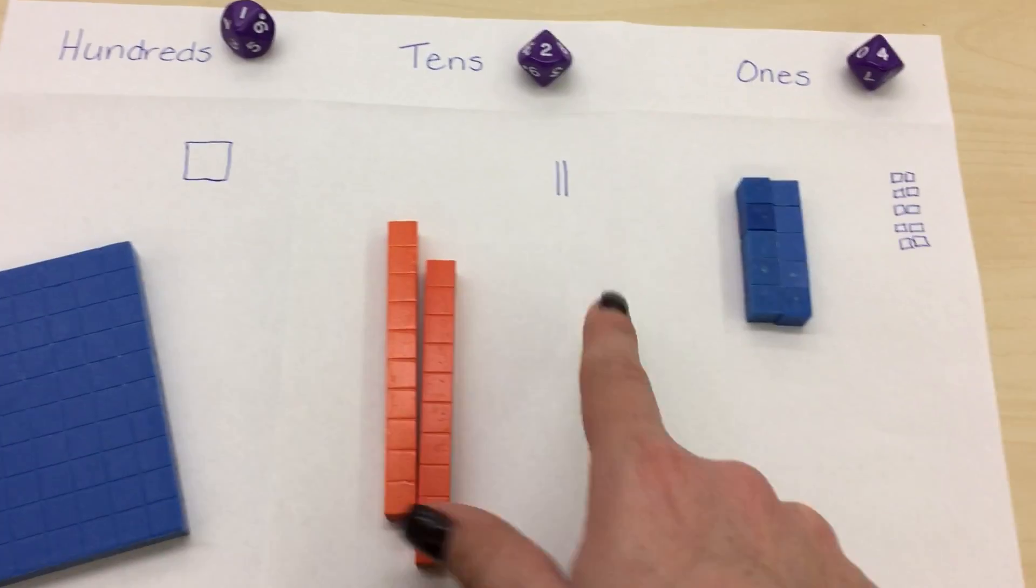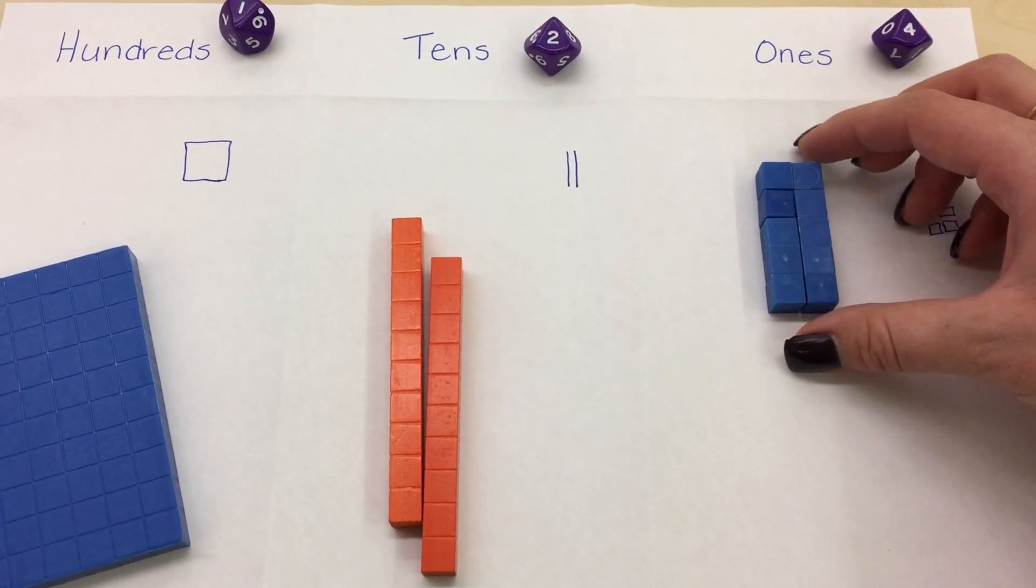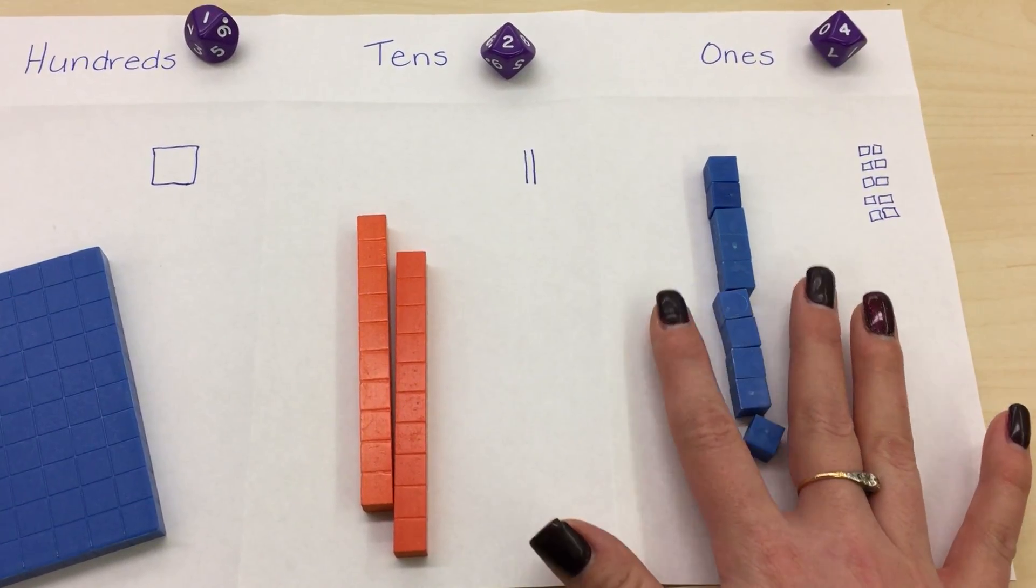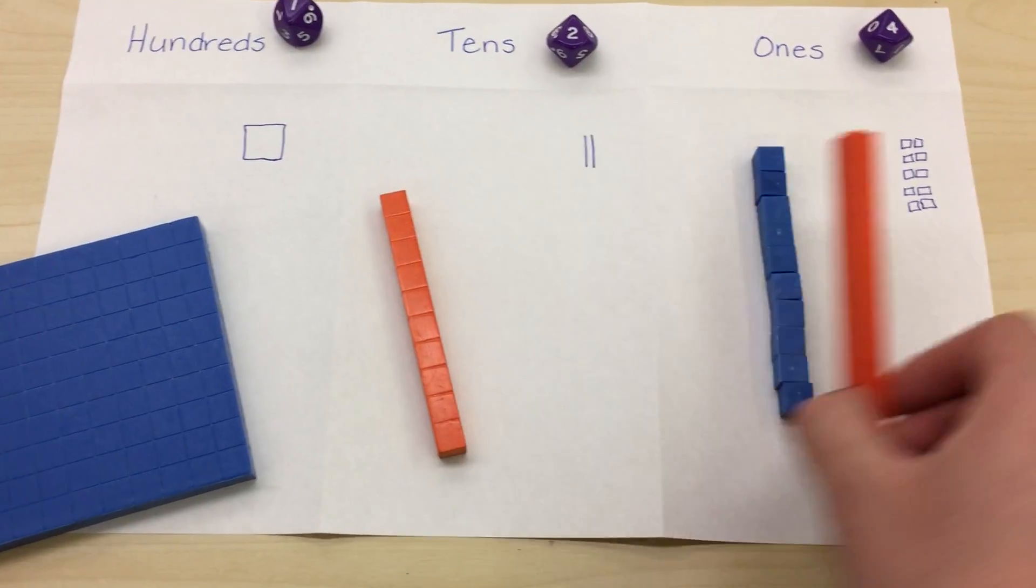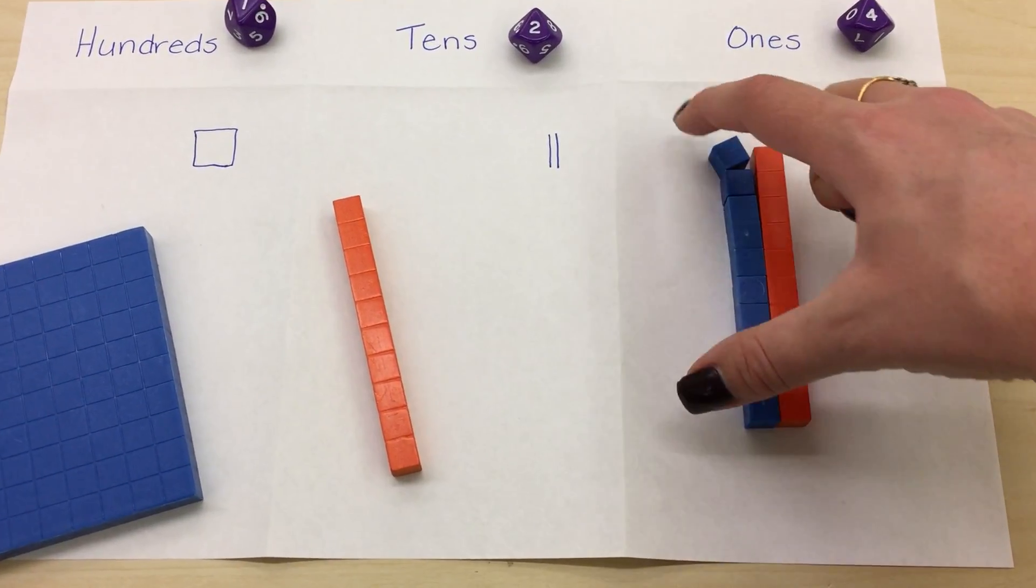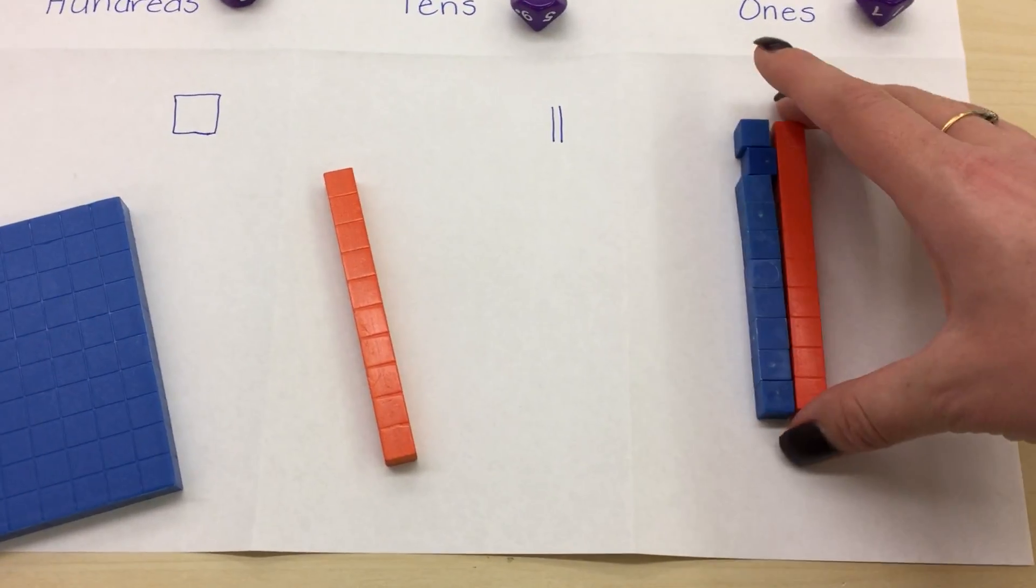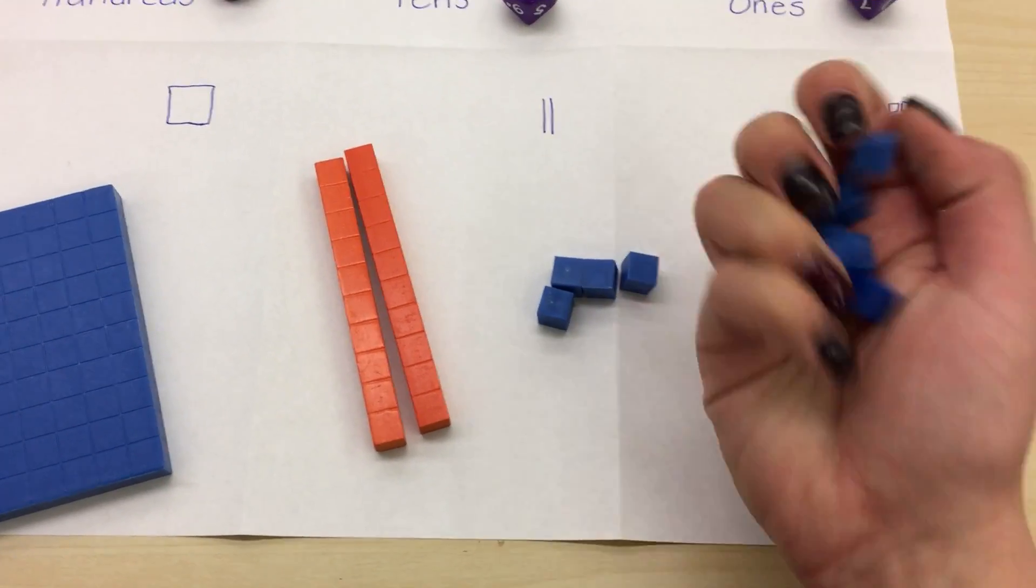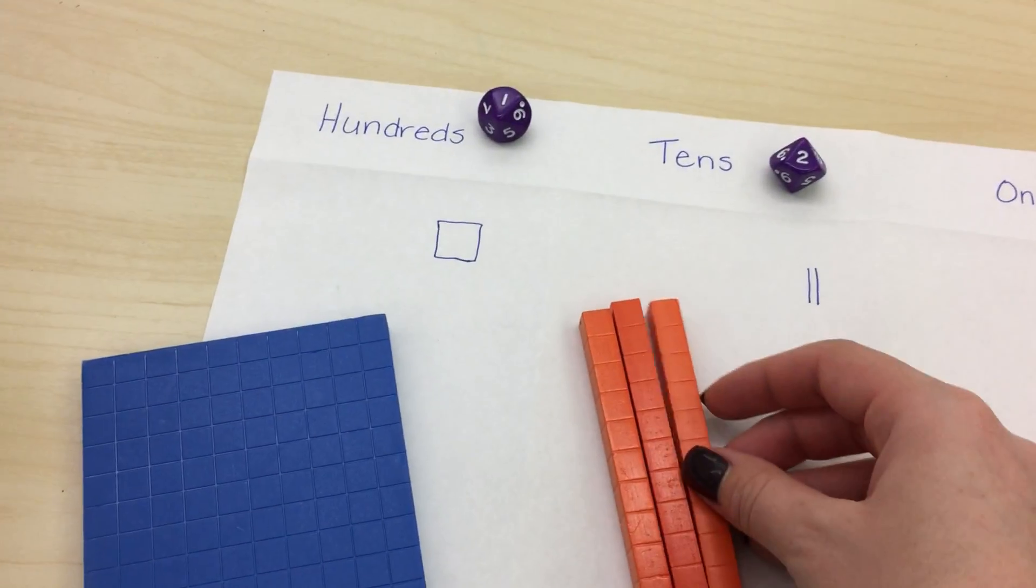Now we can see that one hundred twenty-ten really doesn't make sense. So I need to look and see that if I put these all together, it looks like a rod. If I measure with my rod, I can see that ten units makes one rod. That means that I can exchange these ten units for one rod.